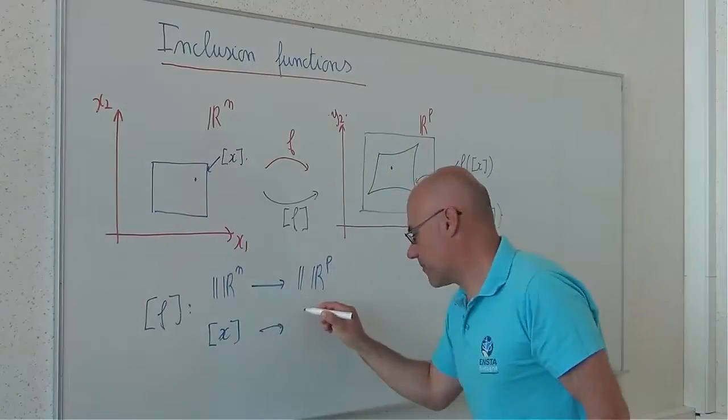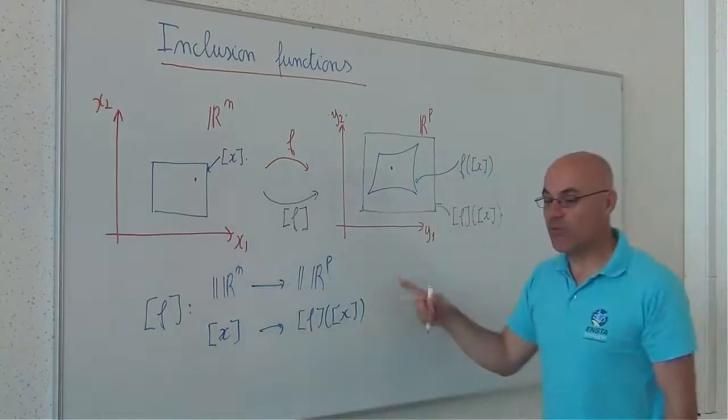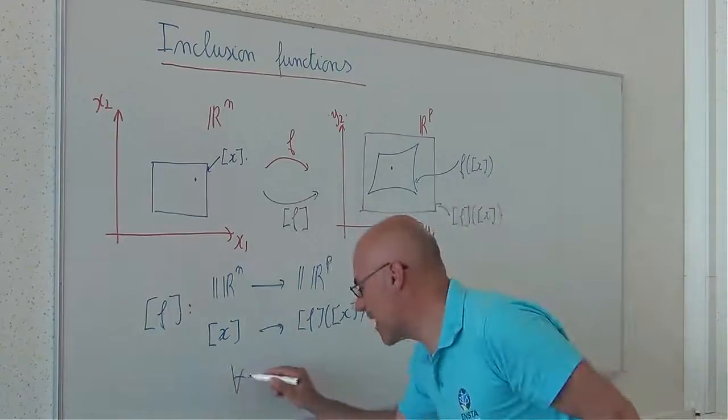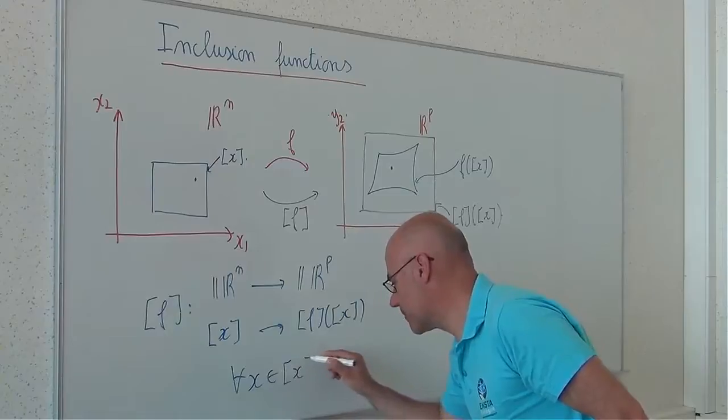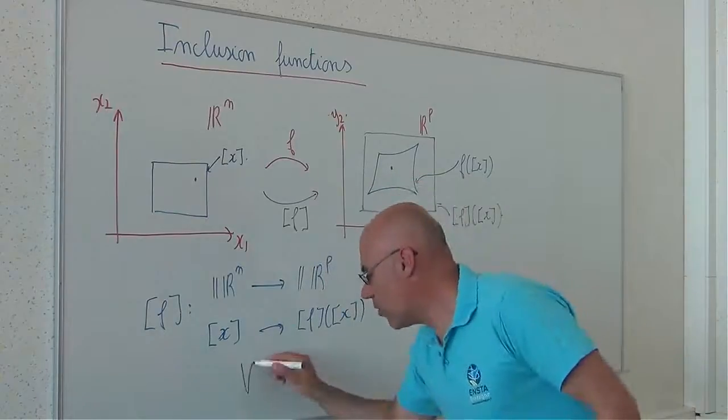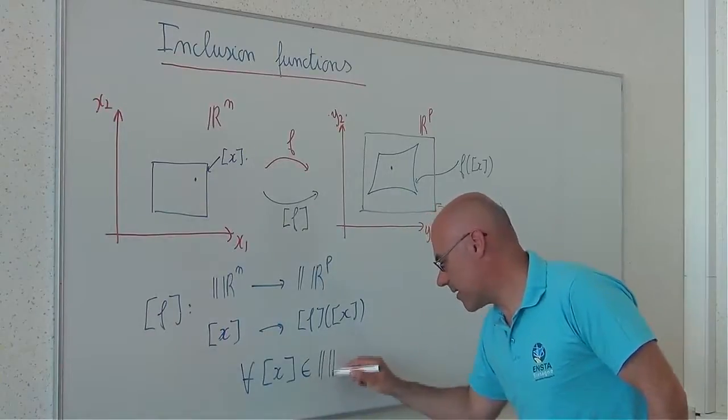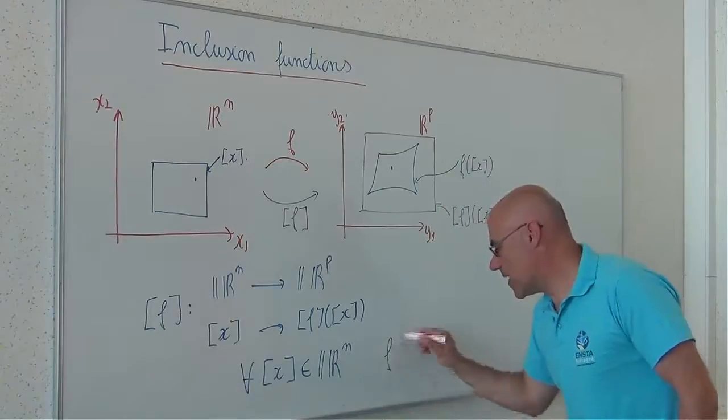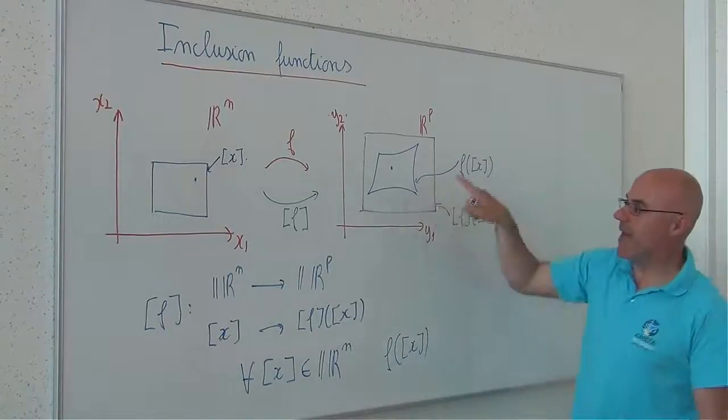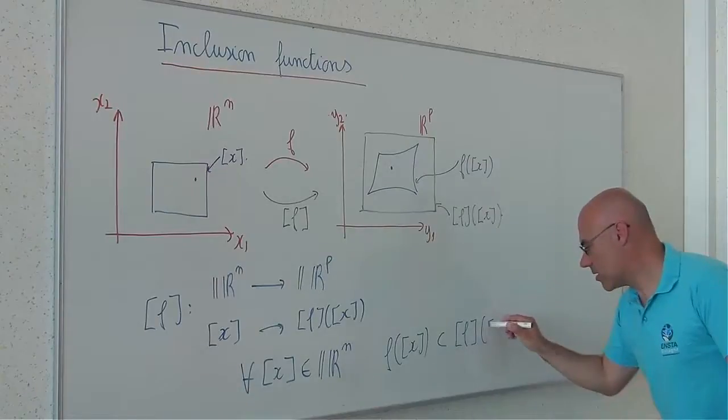So x associates f of x, but to have an inclusion function, I have to satisfy a property. Which property? For all x which belongs to IR^n, the image of x by f should be included in the inclusion function.